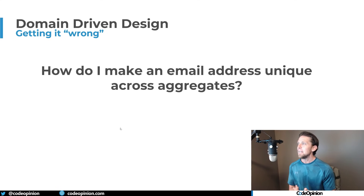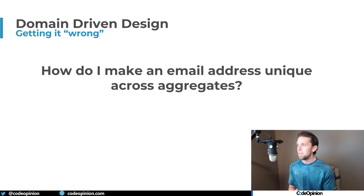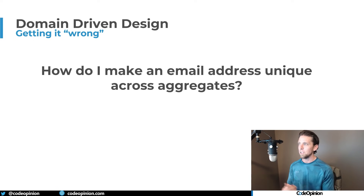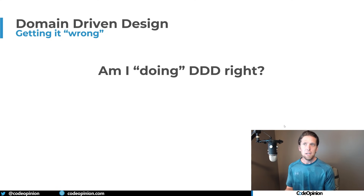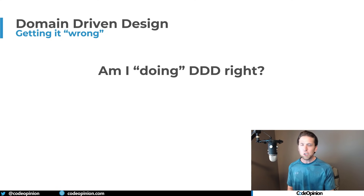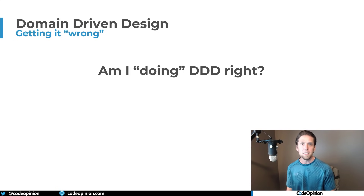How do I make an email address unique across aggregates? This one has probably been questioned countless times, and again it just goes back to what I was referring to. So am I doing DDD right? If you're concerned about those types of things I just mentioned, no, I don't think you're doing DDD right.